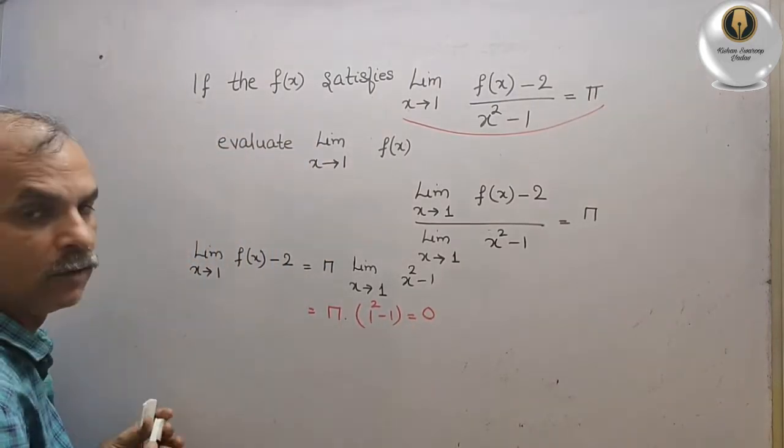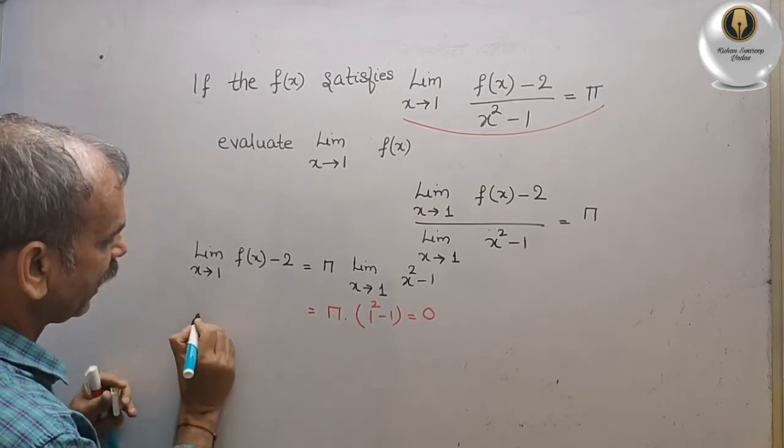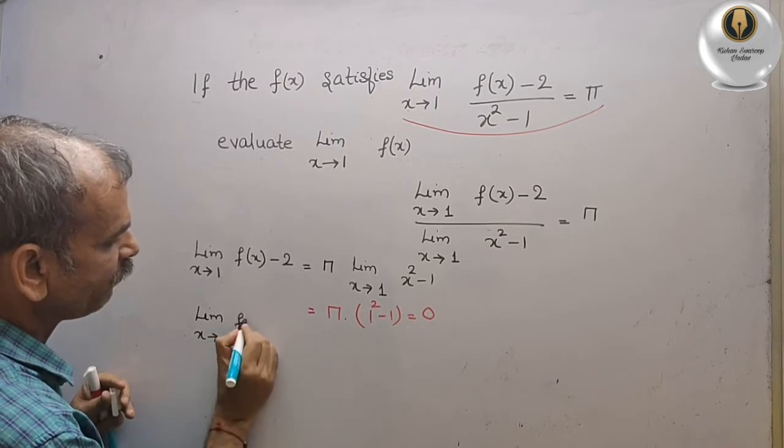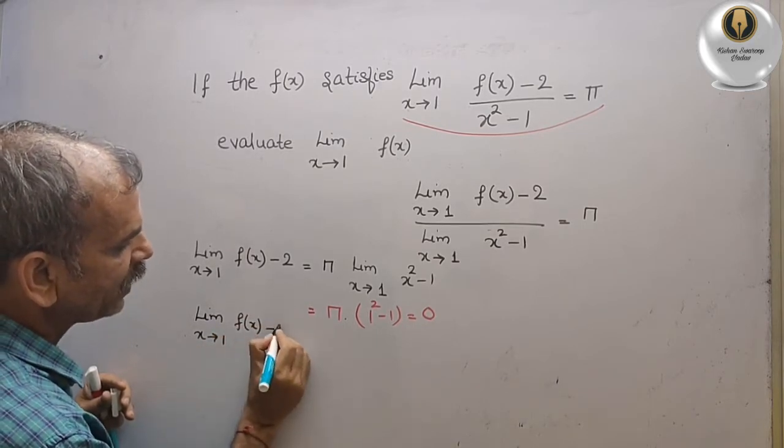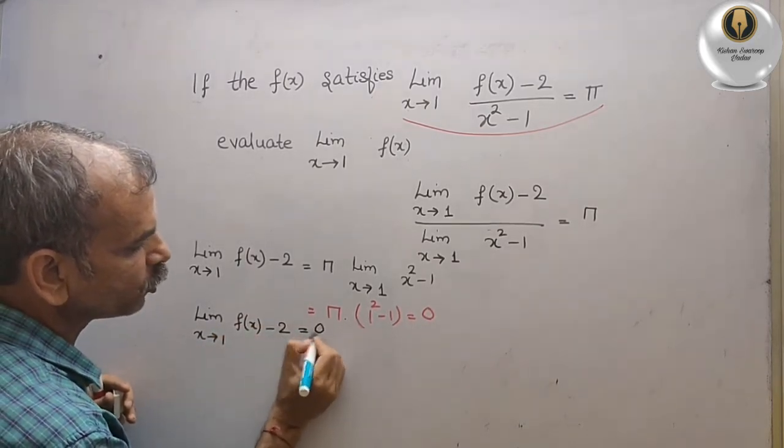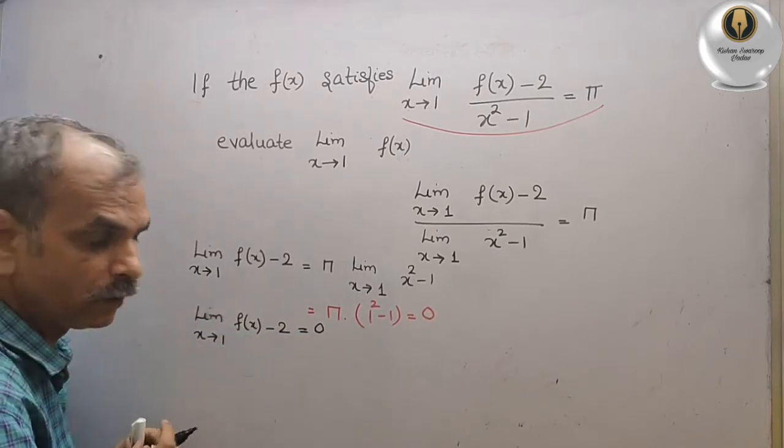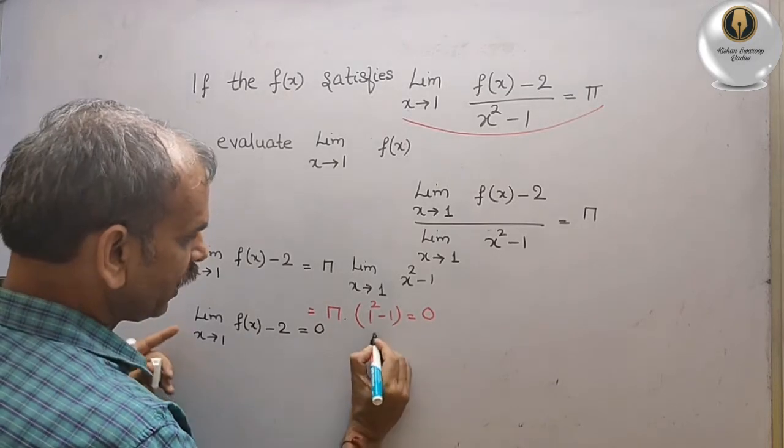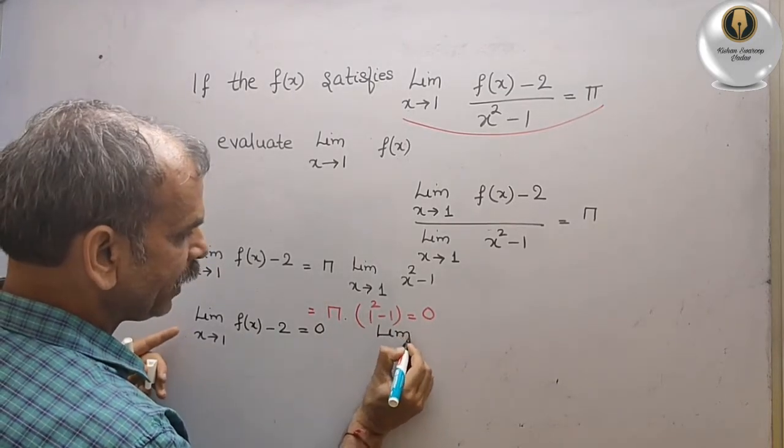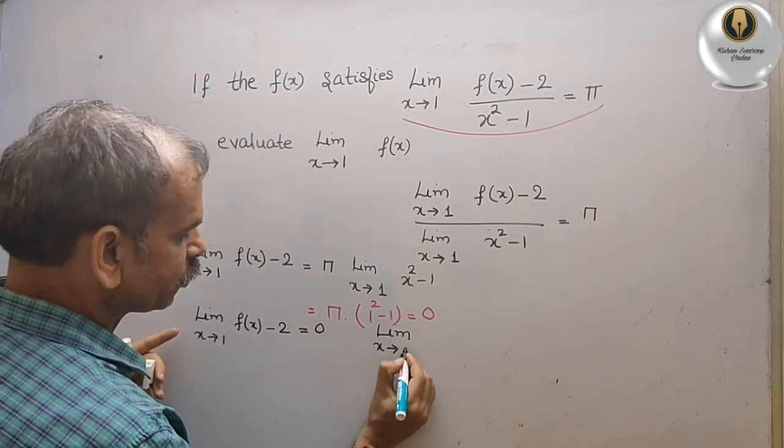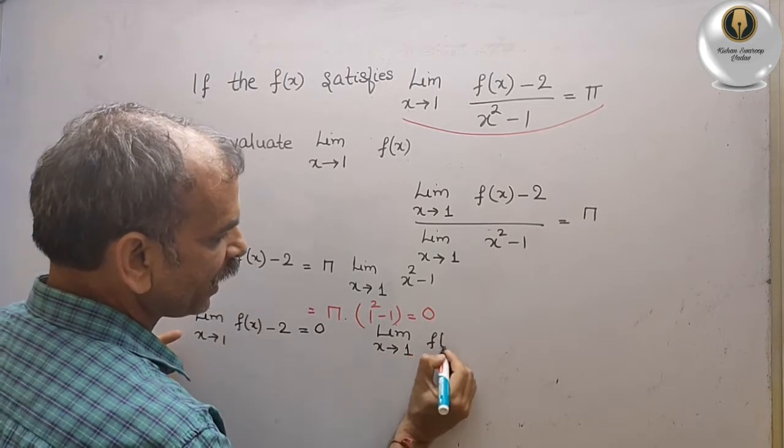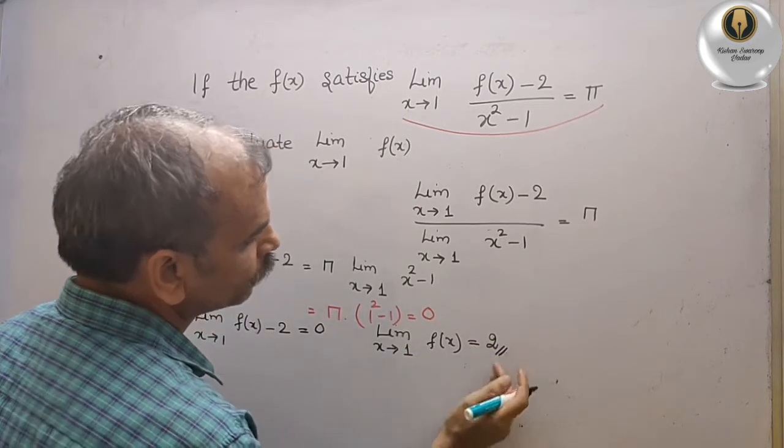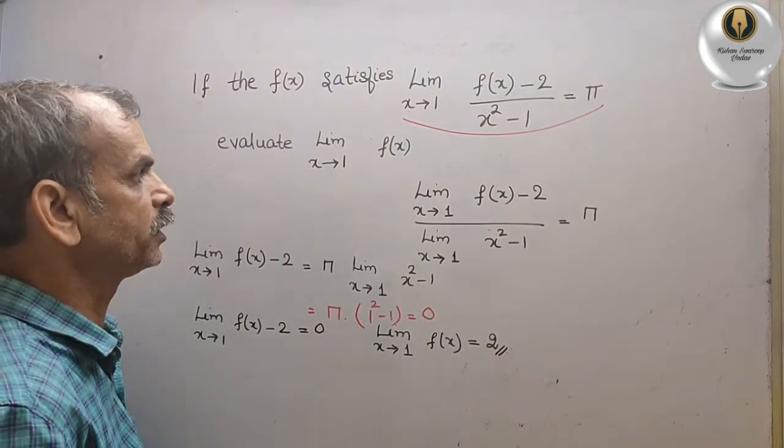So therefore, what is that? We will get limit x tends to 1, f(x) minus 2 is equal to 0. Now bring this minus 2 to your right side. What we will get? We get limit x tends to 1, f(x) is equal to 2. This way you have to solve it.